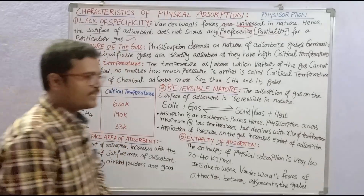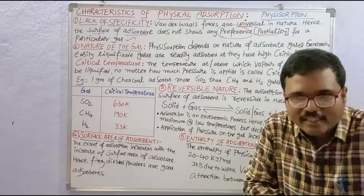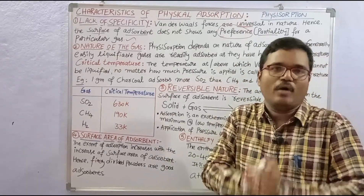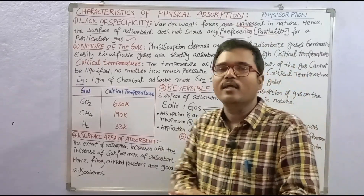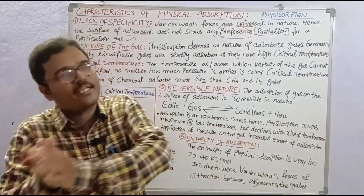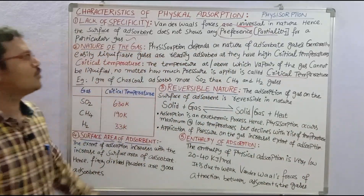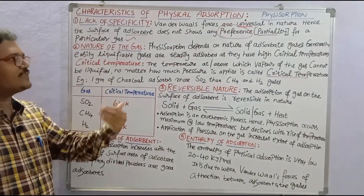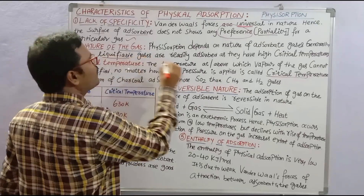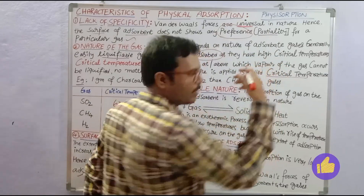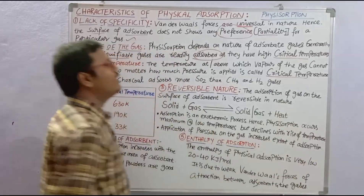The second characteristic is the nature of the gas. Gases that are easy to liquefy are more readily adsorbed. Gases that are easily liquefiable are readily absorbed by the adsorbent through physical adsorption, because they have a high critical temperature.